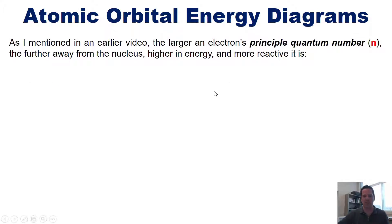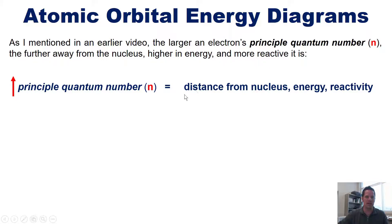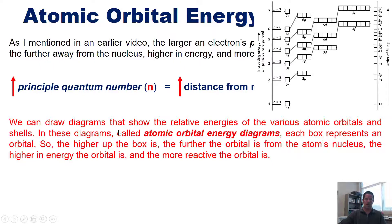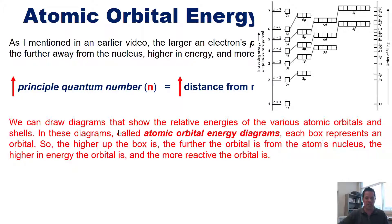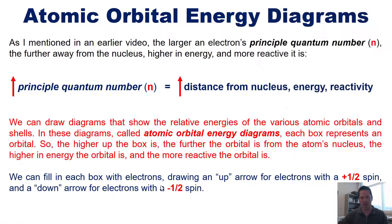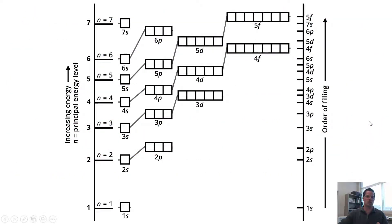The larger an electron's principal quantum number n, the further from the nucleus, the higher in energy, and the more reactive it is. We can draw atomic orbital energy diagrams showing the relative energies of the various orbitals. Each box represents an orbital — the higher up the box, the higher the energy. We fill these boxes with electrons, drawing an up arrow for spin +1/2 and a down arrow for spin -1/2. Let's use oxygen, which has the configuration 1s2 2s2 2p4.